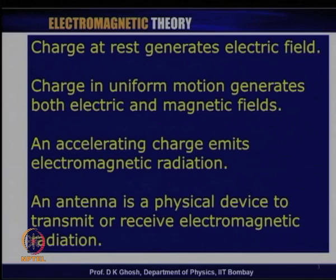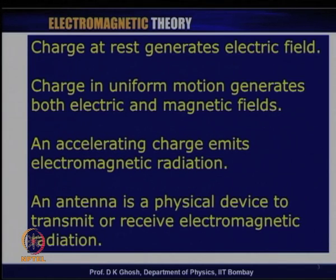We know from electrostatics that when we have charge at rest, it generates an electric field — electrostatic fields. However, if you look at charge in uniform motion, then in addition to the electric field, because this is a current which is a source of magnetic field, this will give rise to both electric and magnetic fields. However, if we have charges which are accelerating, then this will emit radiation. An antenna is a physical device to either transmit or receive electromagnetic waves or electromagnetic radiation.